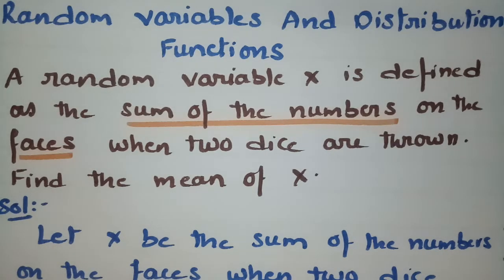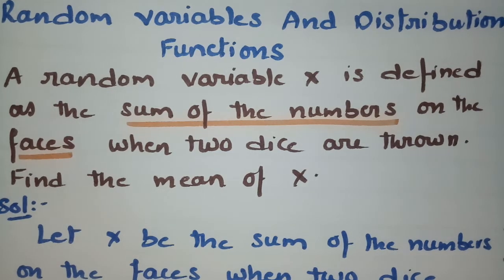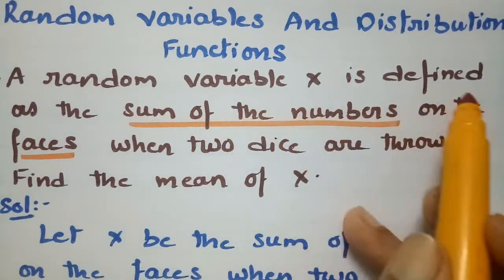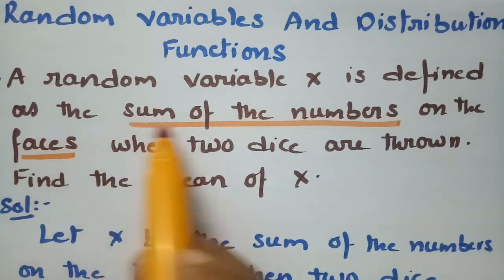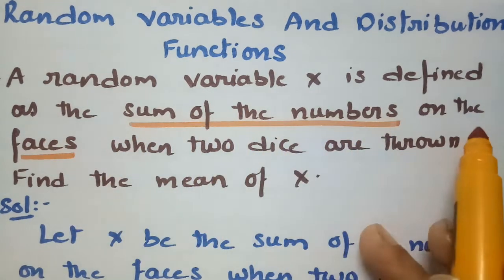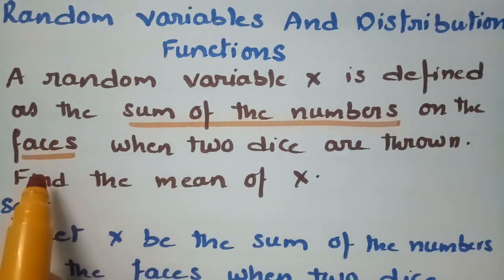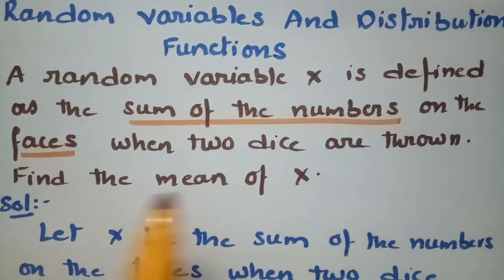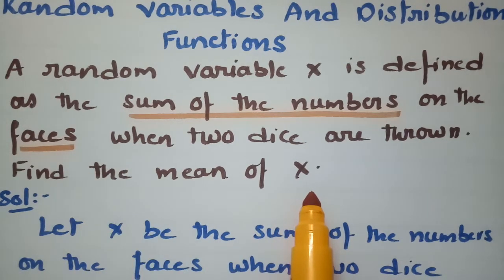Today's video we are going to give a solution for the most important problem from random variables and distribution functions. A random variable x is defined as the sum of the numbers on the faces when two dice are thrown. Find the mean of x.